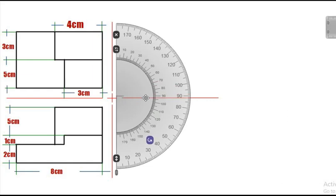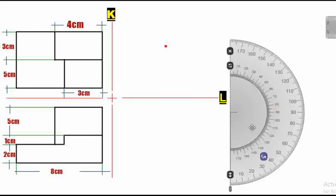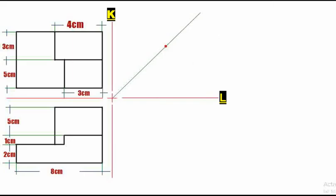Using the protractor again, draw a 45-degree angle between lines K and L starting from point O. Let's name this line M.